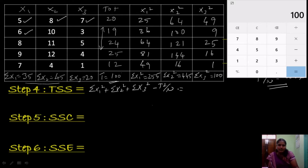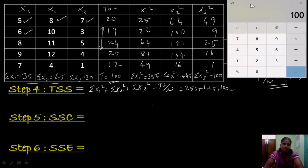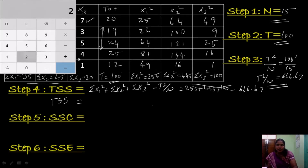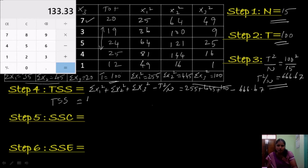So sigma x1 squared is 255, sigma x2 squared is 445, sigma x3 squared is 100, minus the correction factor value of 666.67. TSS equals 255 plus 445 plus 100 minus 666.67, we get the total as 133.33. This is our total sum of squares.